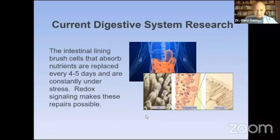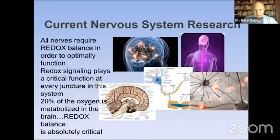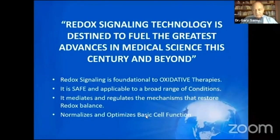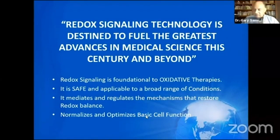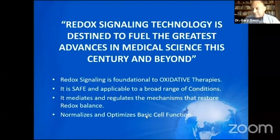Digestive system research shows it helps the digestive system to replace cells. Cell signaling is also important in the nervous system and it aids there. It's safe and applicable to everything. In the genetic research, which is difficult because there are thousands of genes moving around and it's hard to find differences in the noise, we found five key genes that we've been able to determine — and they were some of the most important signaling genes that exist in our body.